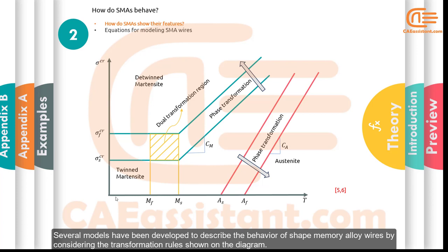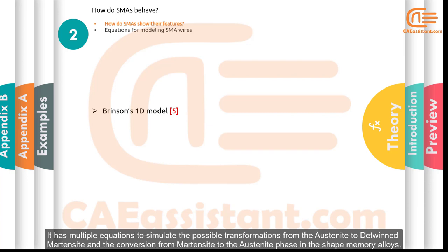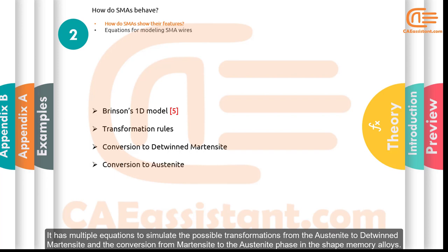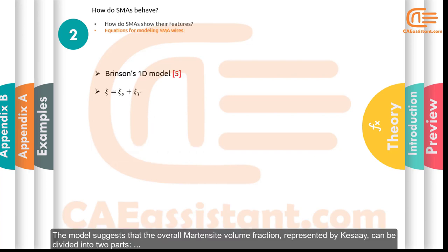Several models have been developed to describe the behavior of shape memory alloy wires by considering the transformation rules shown on the diagram. One of the most well-known is Brinson's model, which has gained the attention of both researchers and practitioners. It has multiple equations to simulate the possible transformations from austenite to detwinned martensite and the conversion from martensite back to the austenite phase. All of the equations depend on a parameter called martensite volume fraction.